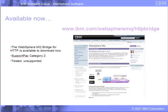This HTTP bridge is available to download now as a Support Pack Category 2. That means that while it's been tested, it's available in an unsupported model. It can be obtained from the HTTP Bridge website shown here. I'd like to thank you for your time in listening to this presentation today. Thank you!